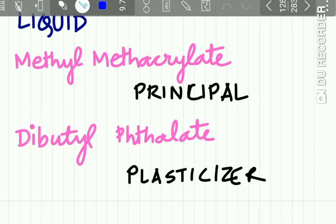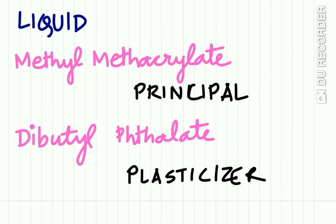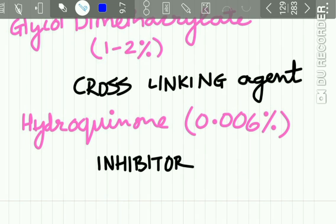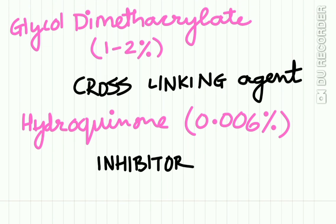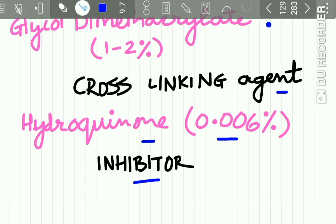The liquid or monomer comprises methyl methacrylate as the principal ingredient, dibutyl phthalate as a plasticizer, glycol dimethacrylate 1–2% as a cross-linking agent, and hydroquinone 0.006% which acts as an inhibitor.